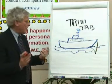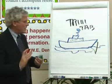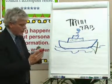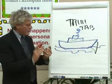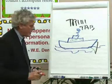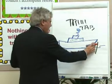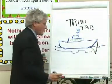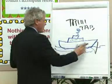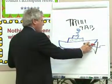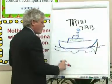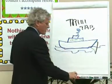The trim tab doesn't have much resistance against the water. What it does is it turns, and it creates a vacuum. And then it allows the rudder to turn, and when the rudder turns, then the whole boat turns.